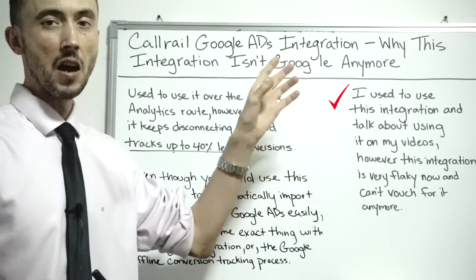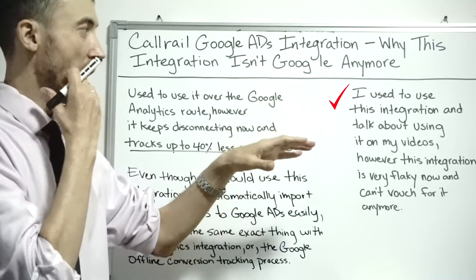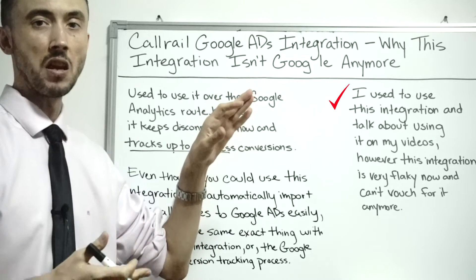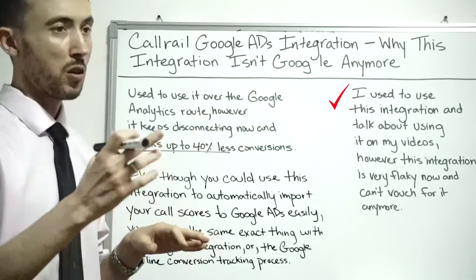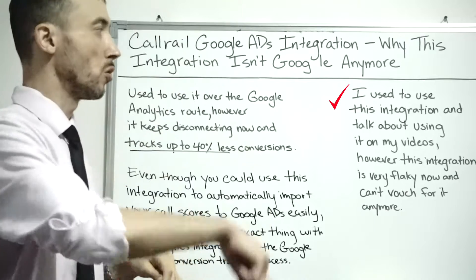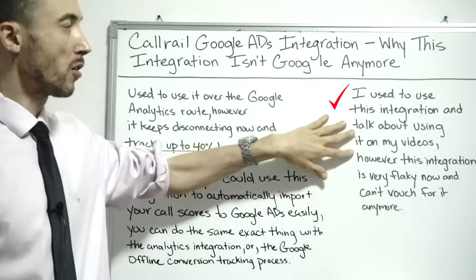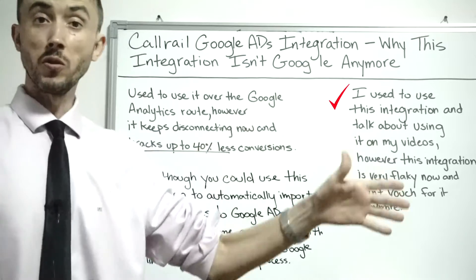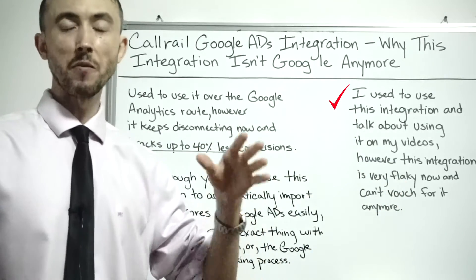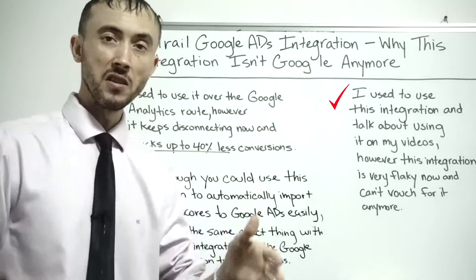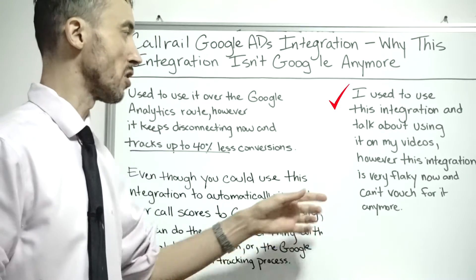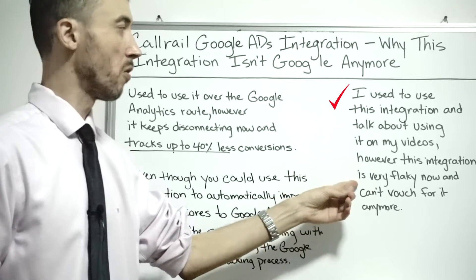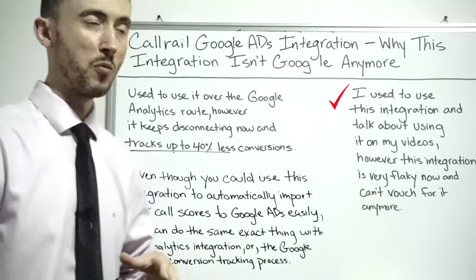I used it as a replacement for the CallRail to Google Analytics integration — which we would then connect to Google Ads. I've talked about this in earlier videos. We used it to do things like call scoring, having that appear inside your Google Ads account to show how calls went. However, this integration is very flaky now and I can't vouch for it anymore.